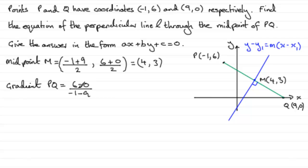So we end up with 6 over minus 10, or minus 6 tenths, which reduces down, cancels down to minus 3 fifths.